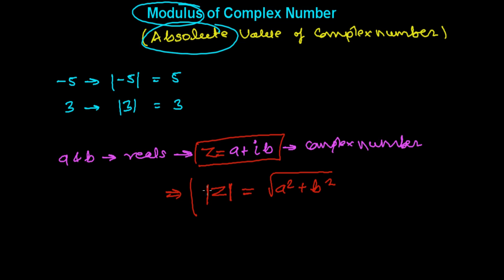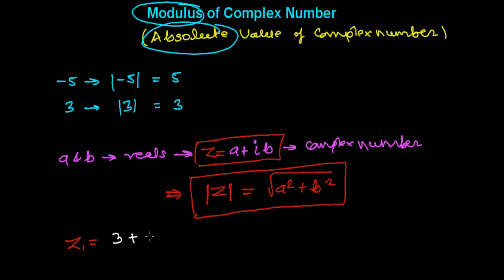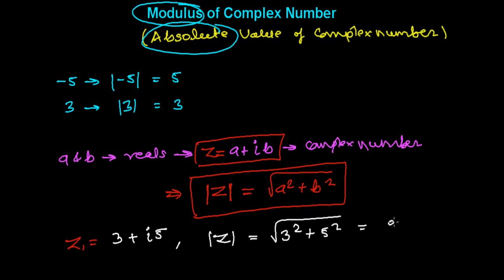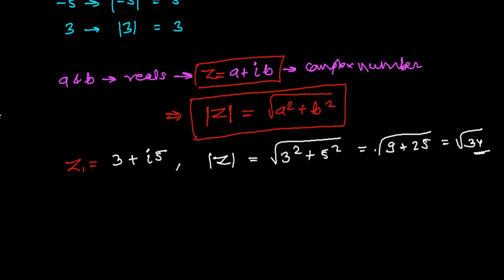For example, let's say we have a complex number z1 equals 3 plus 5i. Then the absolute value of z1 is the square root of 3 squared plus 5 squared, which is the square root of 9 plus 25, giving us the square root of 34.